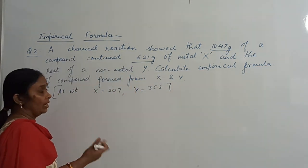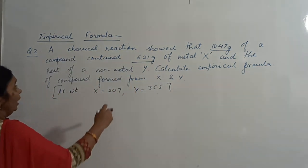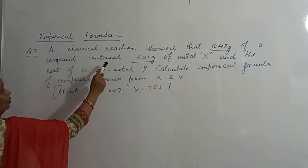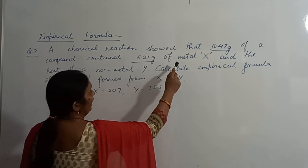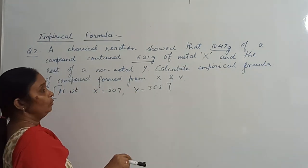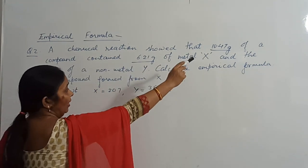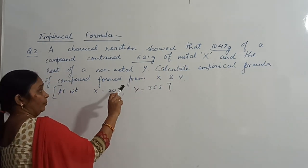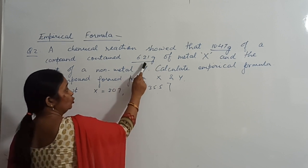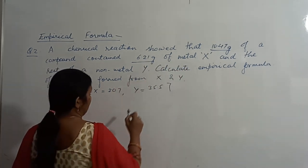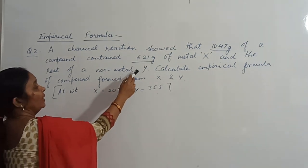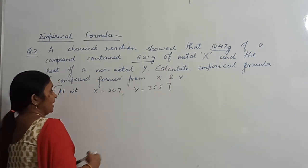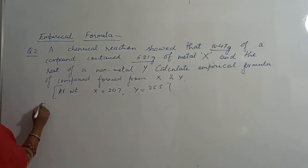The first question today which I am going to discuss is: a chemical reaction showed that 10.47 grams of a compound contains 6.21 grams of metal X. There is a compound which is 10.47 grams, and out of 10.47 grams, that compound has 6.21 grams of a metal X. So how are we going to solve it?